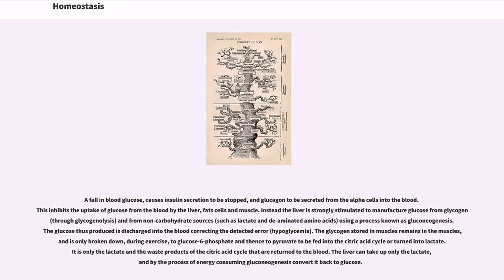A fallen blood glucose causes insulin secretion to be stopped, and glucagon to be secreted from the alpha cells into the blood. This inhibits the uptake of glucose from the blood by the liver, fat cells, and muscle. Instead, the liver is strongly stimulated to manufacture glucose from glycogen through glycogenolysis, and from non-carbohydrate sources such as lactate and deaminated amino acids, using a process known as gluconeogenesis. The glucose thus produced is discharged into the blood correcting the detected error — hypoglycemia. The glycogen stored in muscles remains in the muscles and is only broken down during exercise to glucose-6-phosphate and thence to pyruvate, to be fed into the citric acid cycle or turned into lactate. Only the lactate and waste products of the citric acid cycle are returned to the blood, and the liver can take up only the lactate and convert it back to glucose by gluconeogenesis.